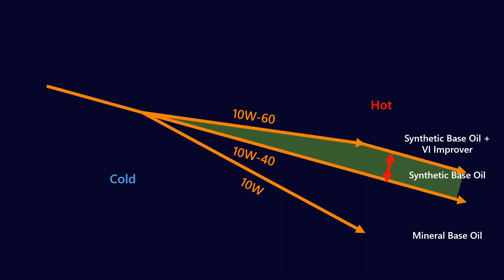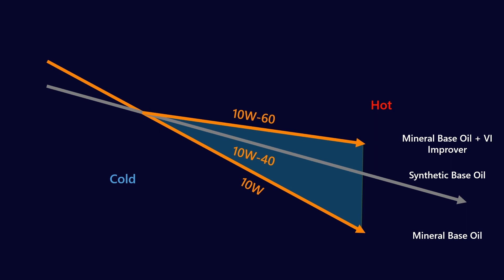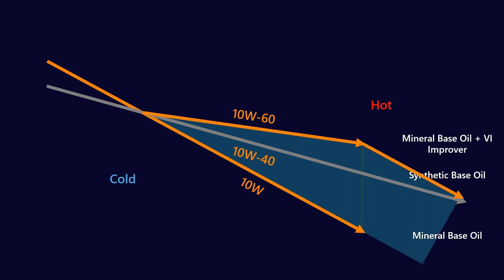Similarly, if we look at the mineral base oil plus VI improver, extending the line out to the left shows that because the quality of the base oil is lower, it has a lower VI. Its performance at very cold temperatures will get much thicker than the synthetic base oil. At higher temperatures, it will get much thinner. It will actually, at very high temperatures, start to look like a 10W40, even with no shearing. This is the reason why you want to start with a really high quality, high VI base oil, rather than starting with a low quality base oil and just adding VI improvers.